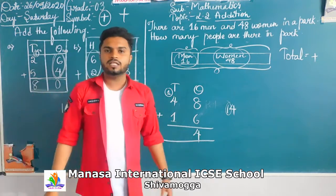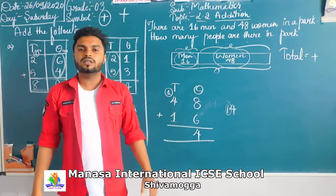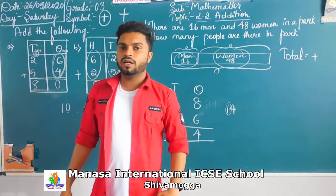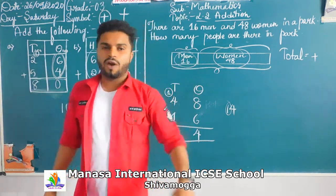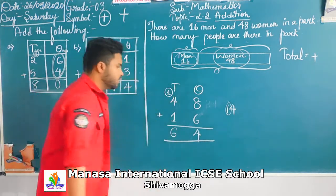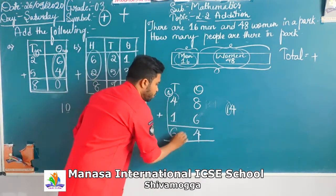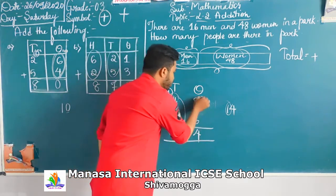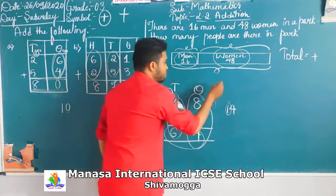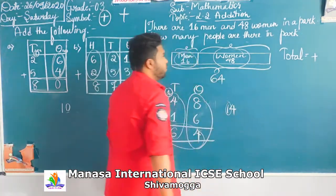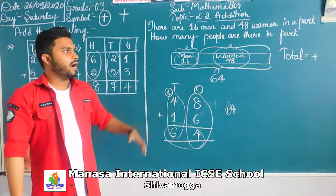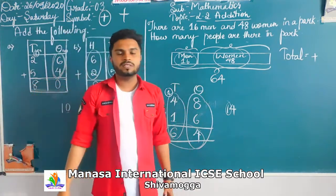Next, in the tens place, we add 4 and 1, plus the carry of 1, giving 6. The total comes to 64. There were 64 people in the park.